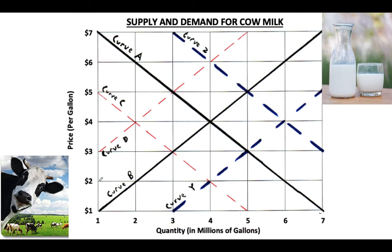If the government sets a price floor below the equilibrium point — say a floor of $2 a gallon when the equilibrium is already $4 — that's not going to change anything, because we're already not selling milk for less than $2. Similarly, a price ceiling above the equilibrium — say a ceiling of $5 a gallon — won't affect us either, because our equilibrium is already below that ceiling. Nothing changes unless there are shifts in supply and demand curves.